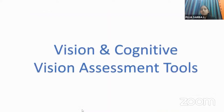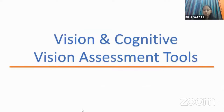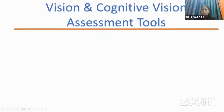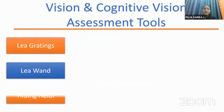For vision and cognitive visual assessment, the tools we use include: Lea Grating, Lea bank for visual field, Hiding Heidi for contrast, Lea Rectangle, Hiding Expressions, Lea Puzzle, cone adaptation, and Lea Mailbox for cognitive skills. I'll now show a video explaining the overall assessment and intervention planning process.